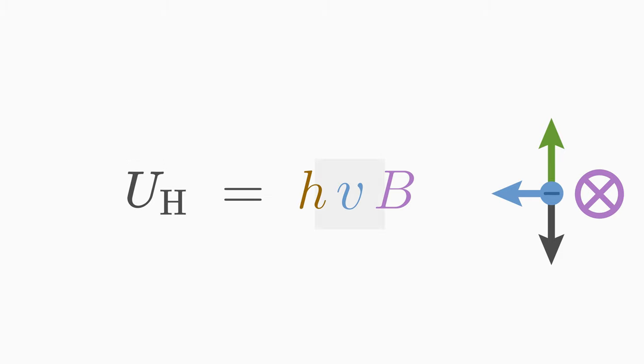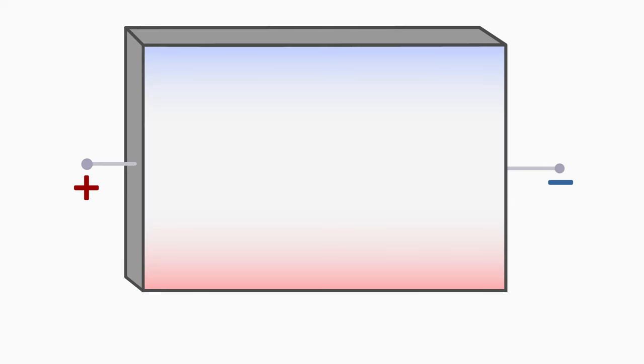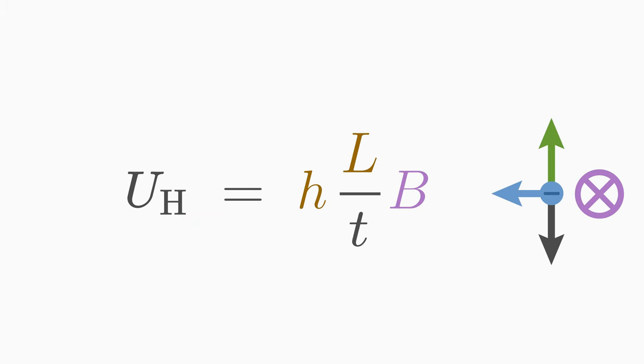You can't measure the velocity v of the electrons directly. Therefore we replace it with the length l of the metal plate divided by the time t, which the electron needs to traverse the distance l. Replace v with l divided by t. Now we have eliminated v, but thereby brought the unknown time t into play.